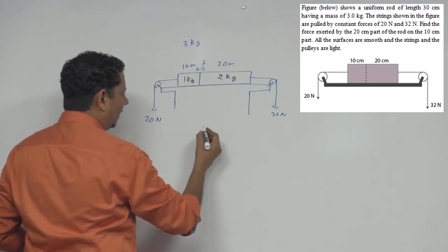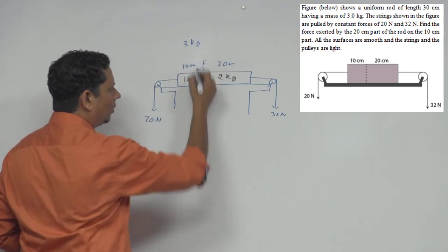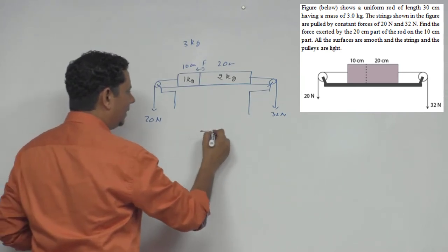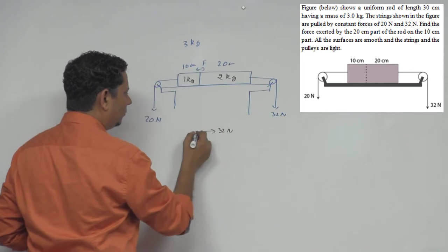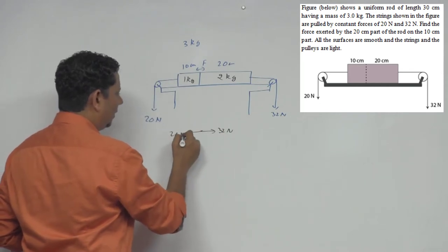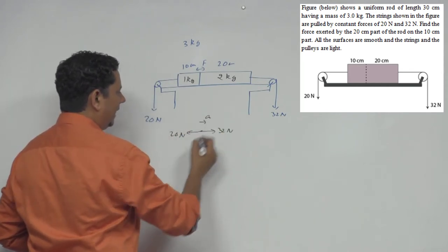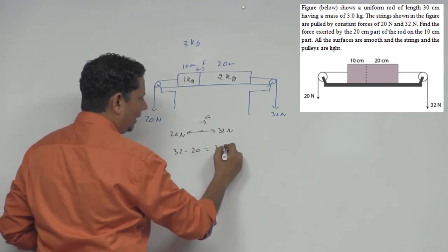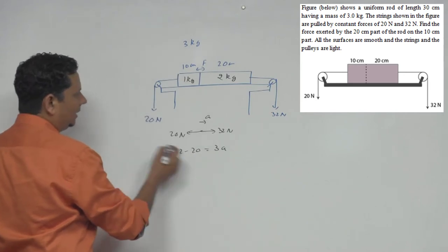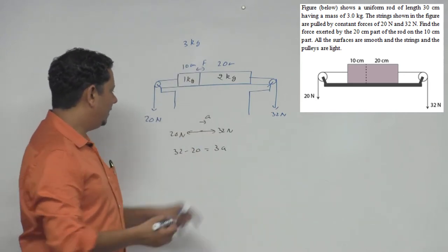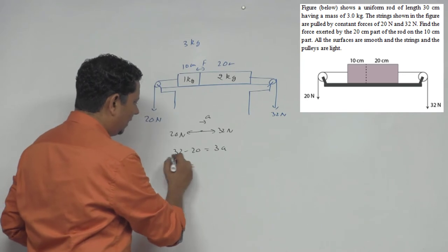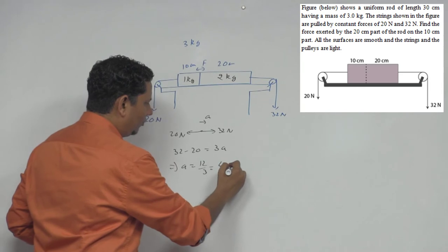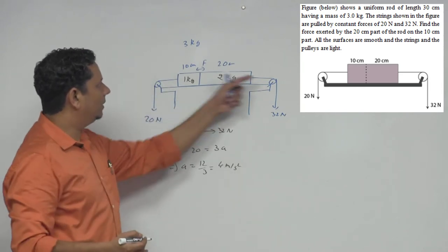For the whole rod's FBD, the normal force and gravity cancel and don't contribute to horizontal motion. Applying Newton's second law: 32 − 20 = 3a, which gives acceleration a = 12/3 = 4 m/s². So the rod accelerates at 4 m/s².